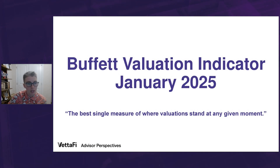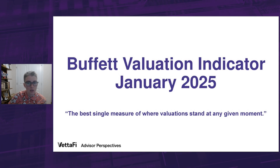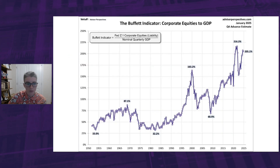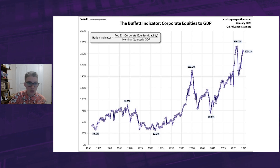Since quarterly GDP data dates back to 1947 and the Fed's balance sheet updates only back to 1951, our analysis does have a limited time frame. So let's start with the basic quarterly ratio. Based on Q4 GDP estimates and January's closing data, the Buffett indicator is at 205.1%, slightly down from December, but still the sixth highest in history.